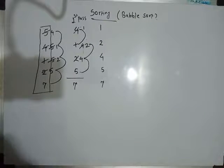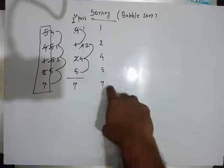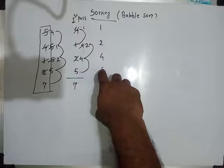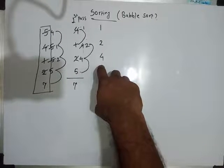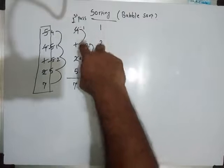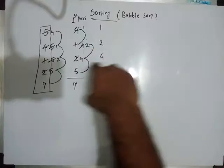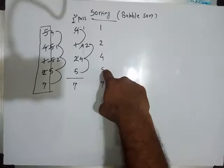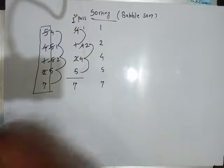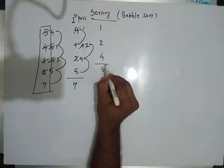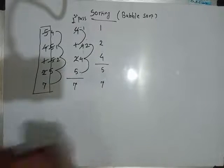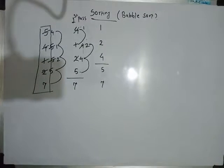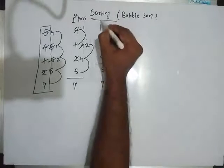If you observe the output of the second pass: at the end of the second pass we have the largest element of the remaining array at this position. So 5 is the largest element and we have 5 at this position. In the second pass we placed the second largest element in its correct place.